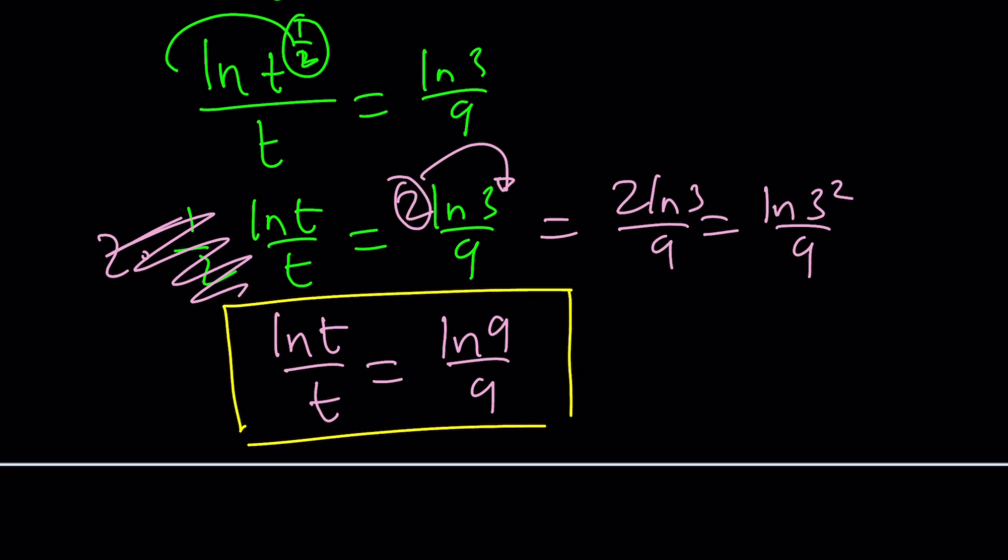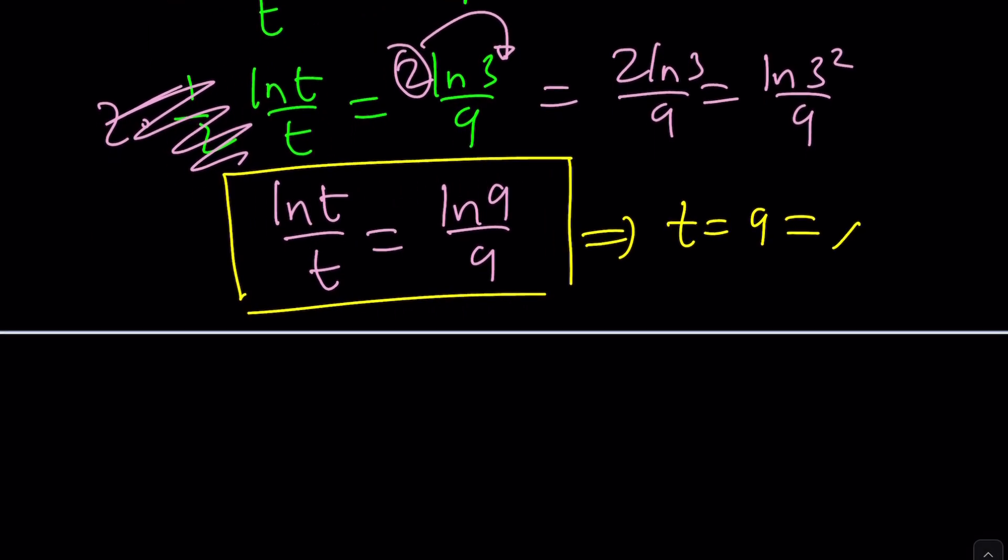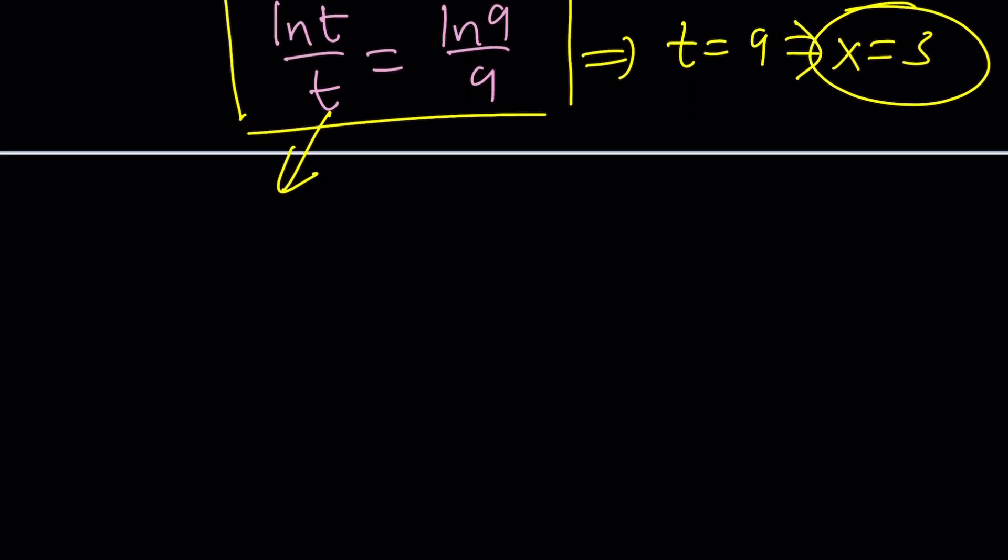Kind of going around in circles, right? We get t=9 from here. Which means, because x was square root of t, from here, x becomes 3. But we already know that, right? Hopefully. Because it was kind of obvious. But what about the other solution? That's a good question. Now, we're going to take this equation and write it in a form where we can apply Lambert's W. Because we haven't applied it yet, right? So, let's do that.